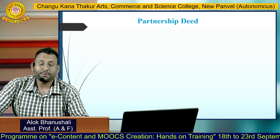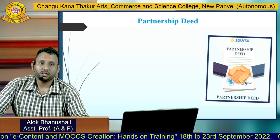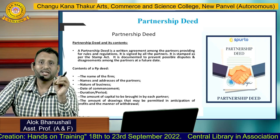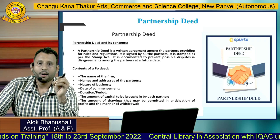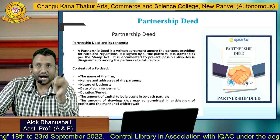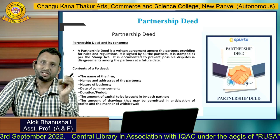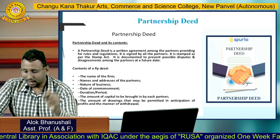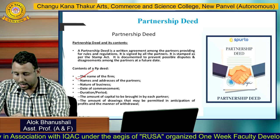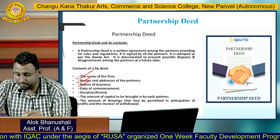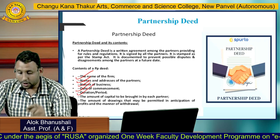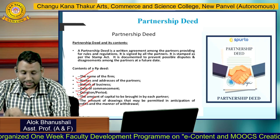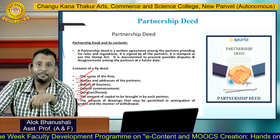The next important topic is the partnership deed. In a partnership, the most important document is the partnership deed. It is a written agreement among the partners providing rules and regulations. It is signed by all partners and stamped as per the stamp act. The partnership deed includes: name of the firm, name and address of partners, nature of business, date of commencement, duration period, amount of capital to be contributed by each partner, and the amount of drawings permitted in anticipation of profit and the manner of withdrawal.